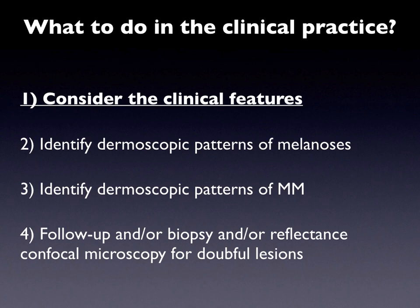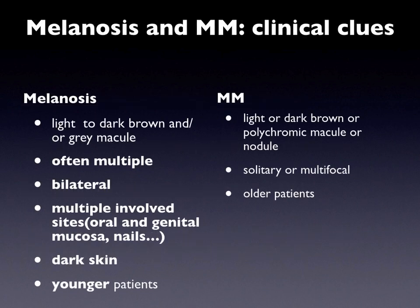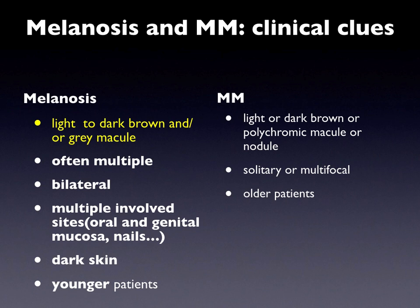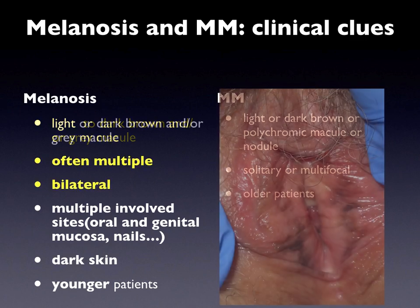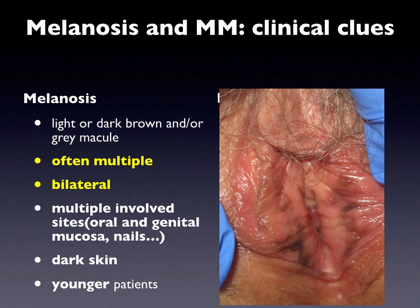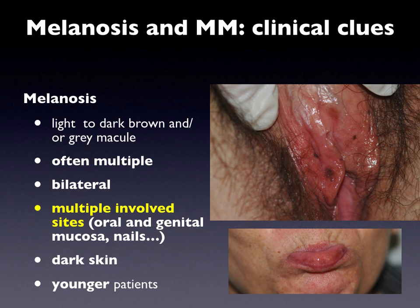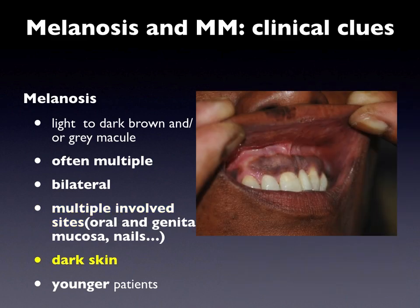There are some clinical clues that can help the differential diagnosis between melanoma and melanosis. Melanosis are never raised, whereas melanoma can be a papule or nodule. Melanosis has a light to dark brown pigmentation and sometimes can be gray due to the presence of melanophages, whereas melanoma is polychromatic. Melanosis are often multiple and bilateral, whereas melanoma is often a solitary lesion. Moreover, a melanosis can involve multiple body sites and are more prevalent in patients with higher skin phototypes, arising in younger patients.